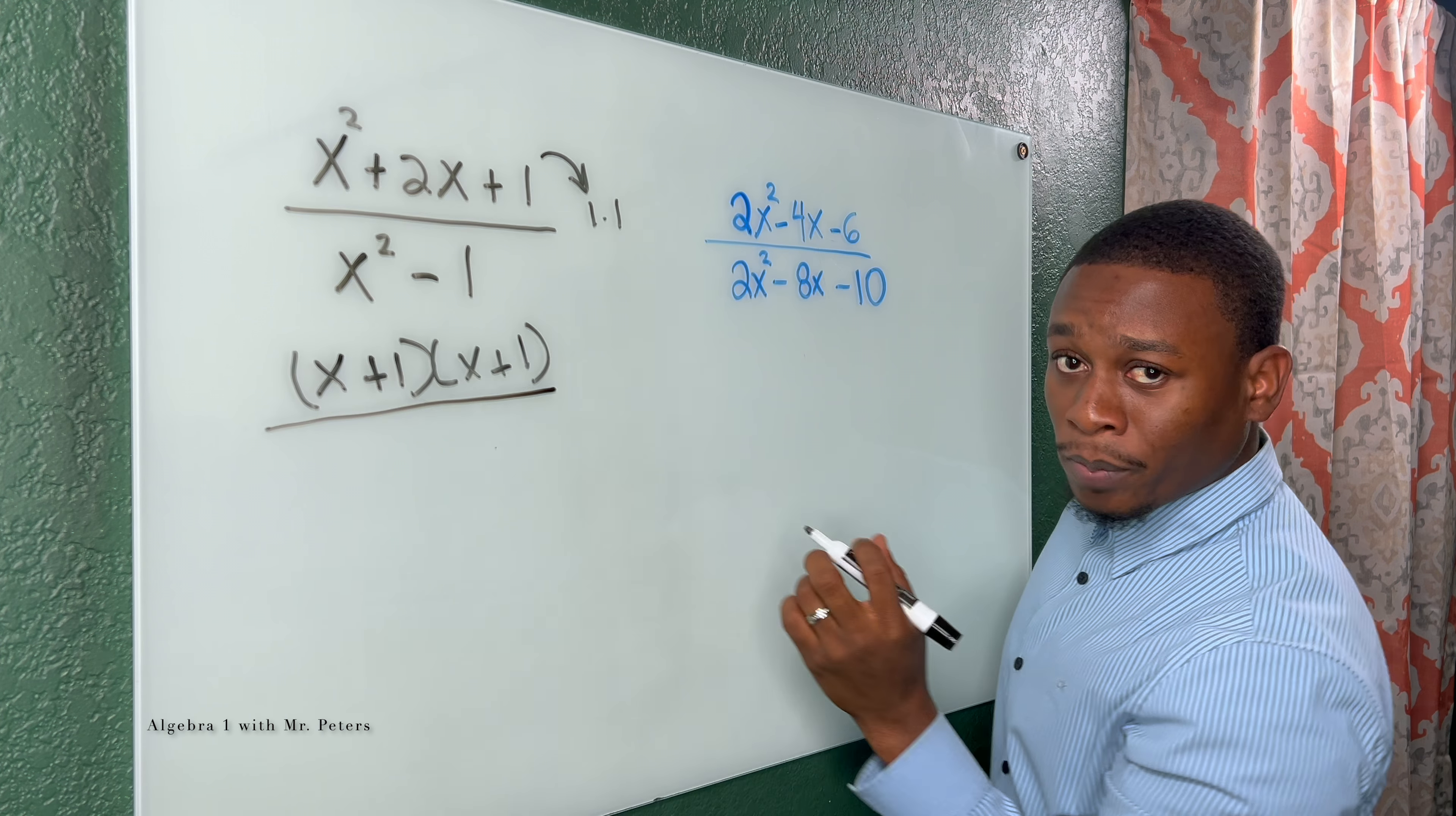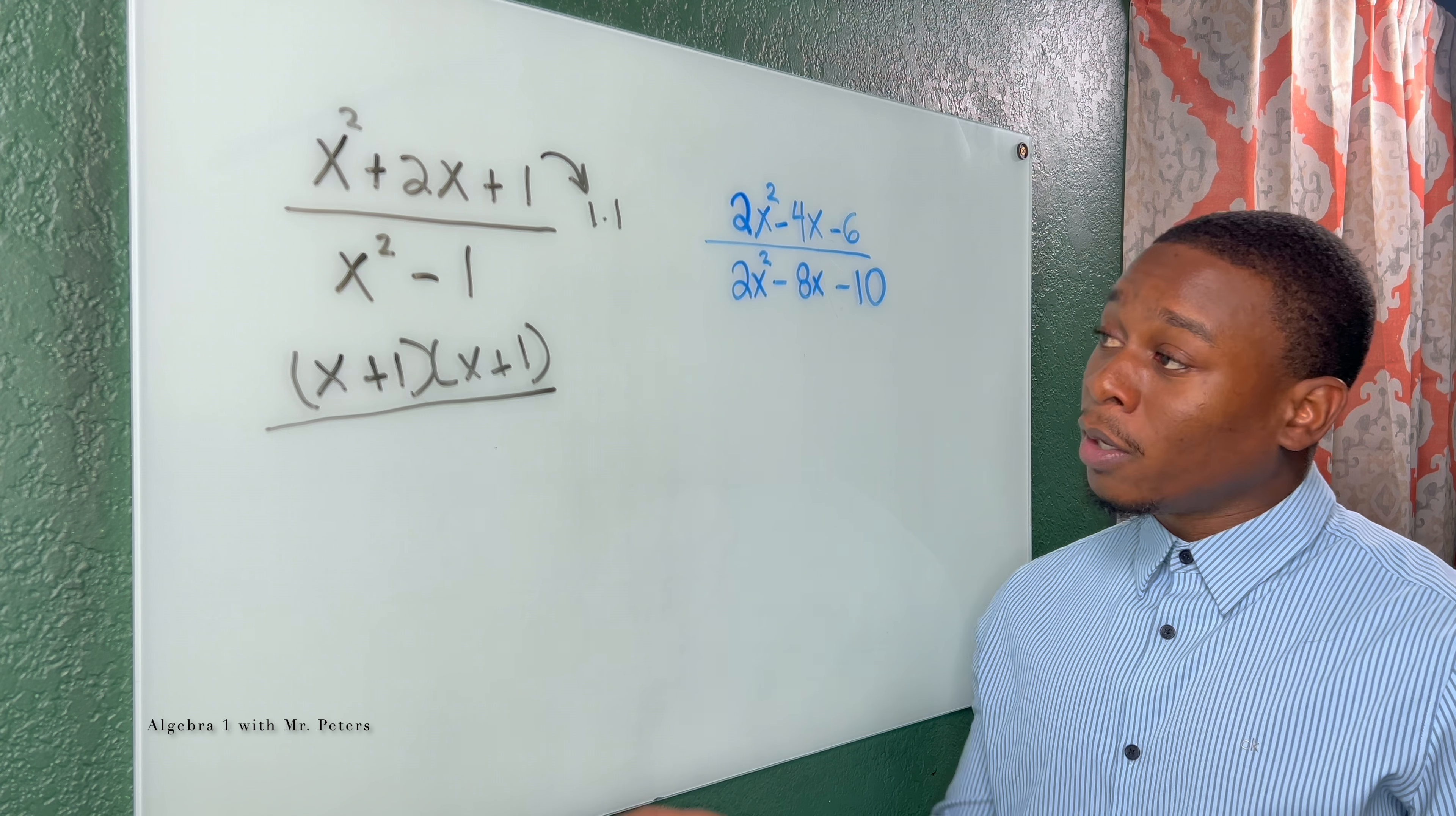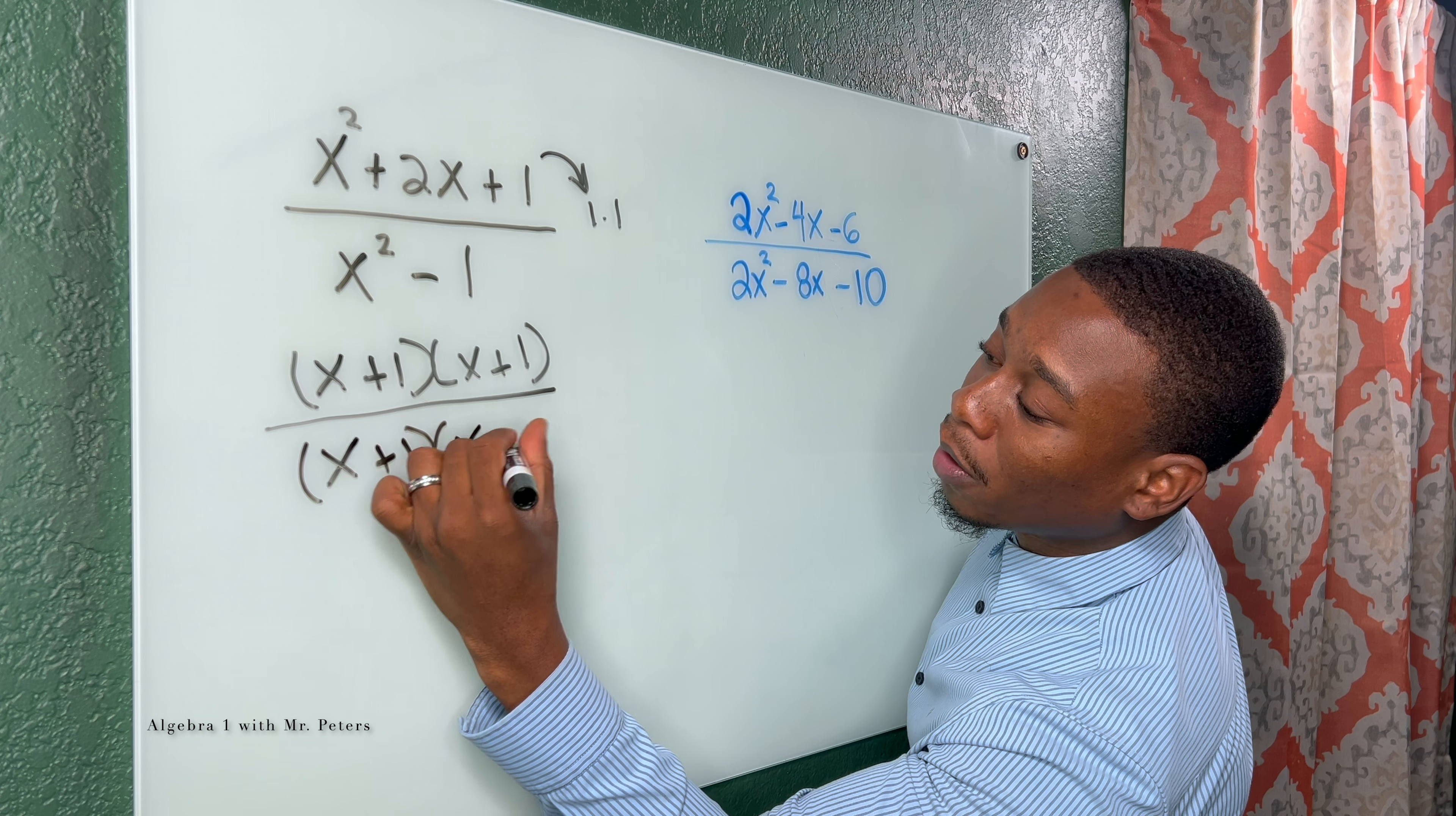Now on the bottom, remember, anytime you have a binomial, x squared minus something, you should always think difference of squares. For us, this is the difference of squares. And the way we simplify this would be x plus 1 times x minus 1.